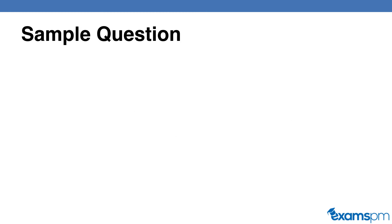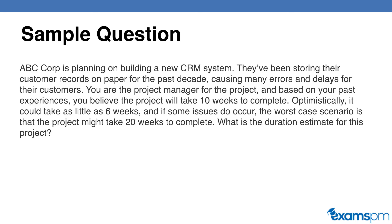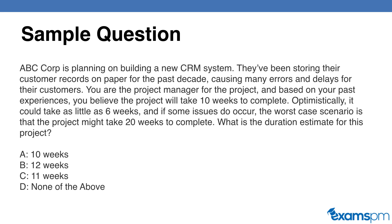Now let's take a look at a sample question you may run into on your PMP exam. ABC Corp is planning on building a new CRM system. They've been storing their customer records on paper for the past decade, causing many errors and delays. You are the project manager, and based on your past experiences, you believe the project will take 10 weeks to complete. Optimistically, it could take as little as six weeks. And if errors and issues do occur, the worst case scenario is 20 weeks. What is the duration estimate? Is it A) 10 weeks, B) 12 weeks, C) 11 weeks, or D) none of the above? Please pause and calculate the answer.